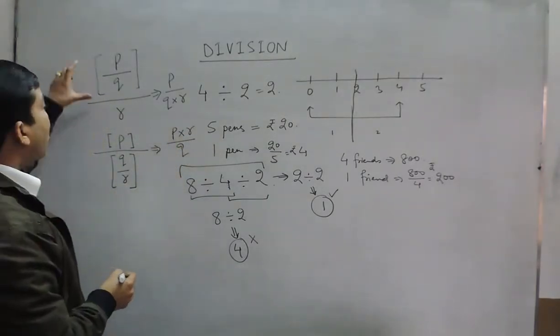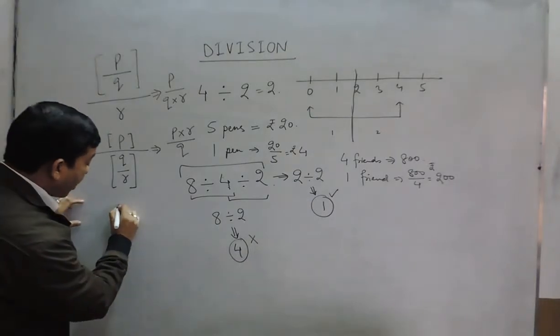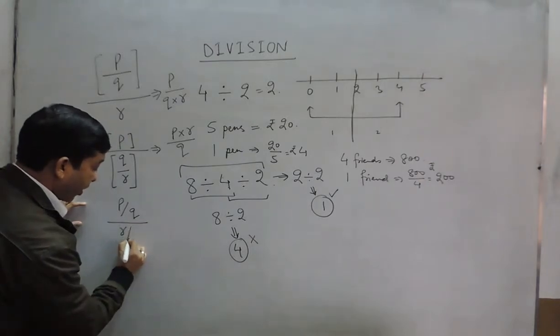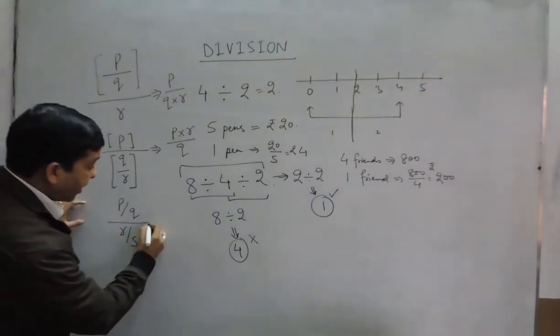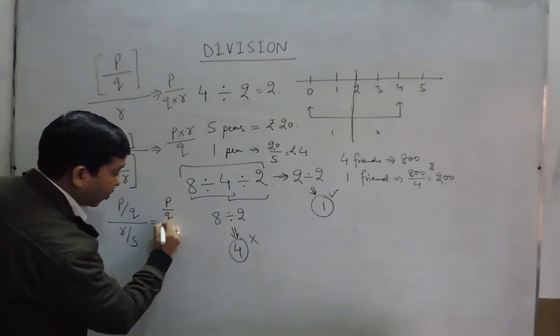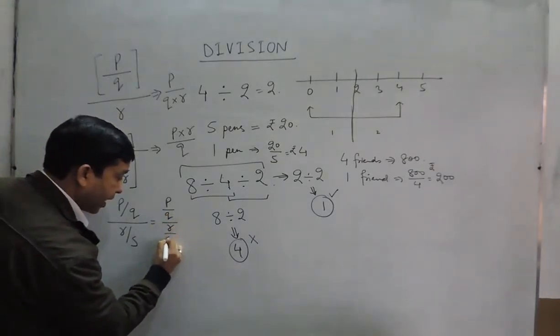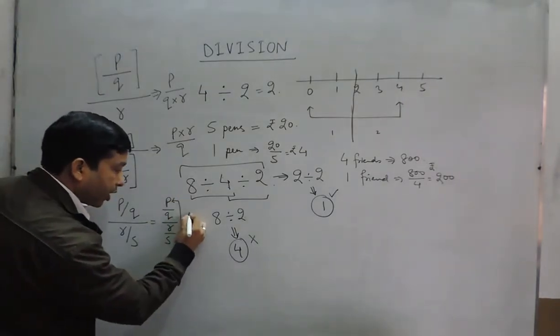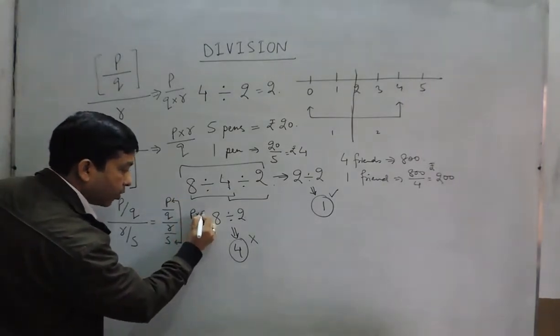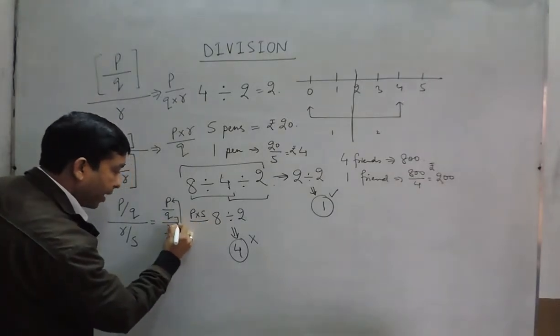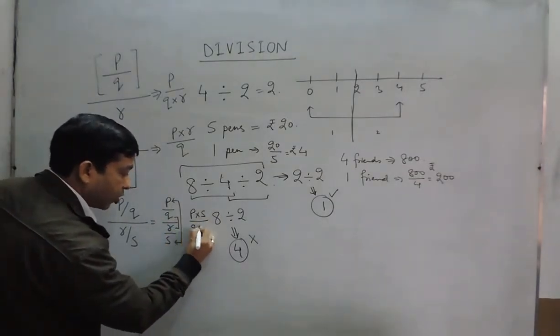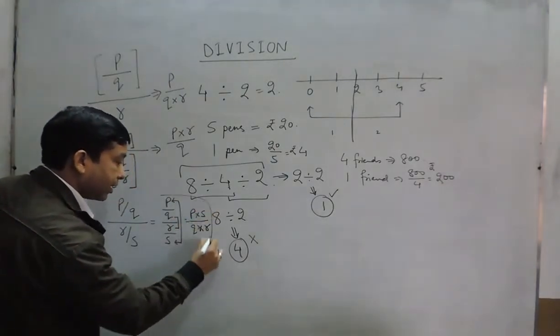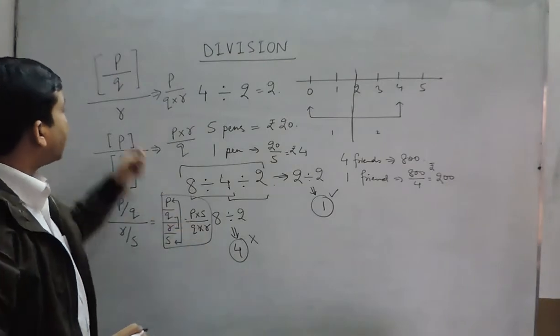This is a very important aspect, because when we talk about four different variables like p upon q and then r upon s, in this case we have to multiply the outer two numbers together and put it in the numerator - p times s - while the middle two numbers have to be the denominator, that is q multiplied by r.